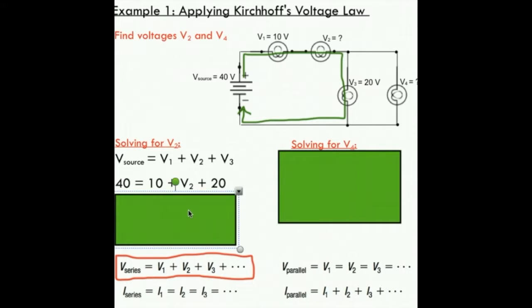I've only got one unknown here, so just doing some algebra, I can solve for V2. That's just an application of Kirchhoff's voltage law for series circuits. The voltage used throughout my circuit is going to be equal to the voltage gained at the beginning.